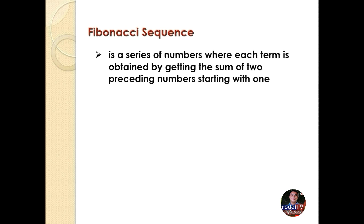But what is a Fibonacci sequence? It is a series of numbers where each term is obtained by getting the sum of two preceding numbers starting with 1. To illustrate: the first term is 1, the second term is 1 plus 0 so we still have 1, the third term is 1 plus 1 equals 2, the fourth term is 2 plus 1 so we have 3, the fifth term is 3 plus 2 equals 5, the sixth term is 5 plus 3 so we have 8, and so on and so forth.